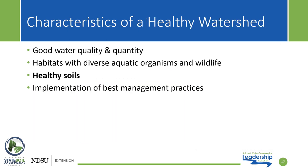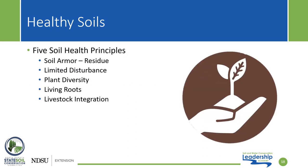The third characteristic of healthy watersheds is healthy soils. Healthy soils support plant growth and species diversity, as well as acting as natural filter systems for groundwater and surface water runoff. The five principles of soil health outline ways to improve degraded and unproductive soils and support healthy watersheds through the implementation of soil armor and residue, limited disturbance, plant diversity, living roots, and livestock integration.